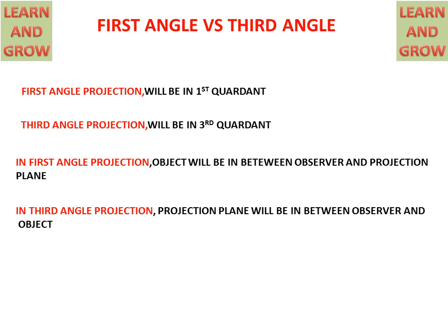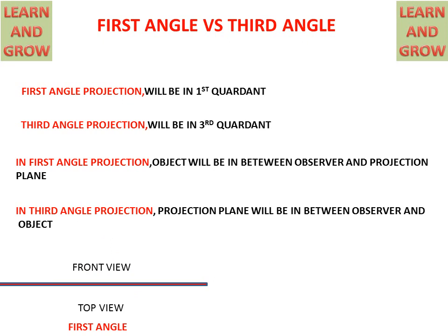Now we see the main first angle and third angle views. In first angle projection, this is the reference line. The front view is made above the reference line and the top view is below the front view. On the left hand side there will be the right hand side view, and on the right hand side there will be the left hand side view. This is first angle projection.